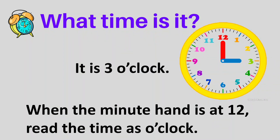When the minute hand is at one it's five, at two it's ten, at three it's fifteen, and so on until eleven it's fifty-five, because you skip count by five. When it reaches twelve that is sixty, but we don't say sixty — we say o'clock. So remember, it's not three twelve, it's not three sixty, it's three o'clock.